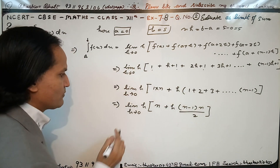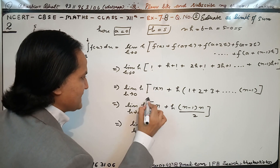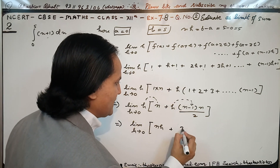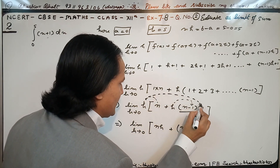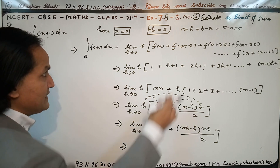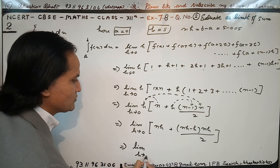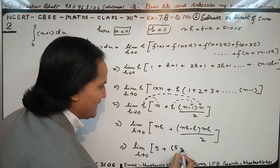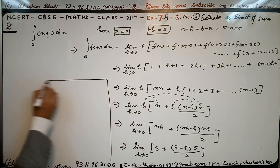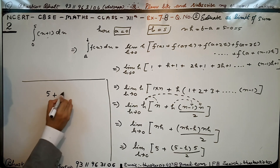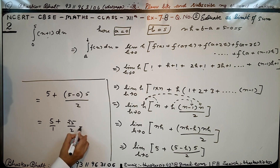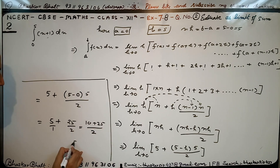अब इसको solve करते हैं। h को bracket में ले जाने पर: n·h = 5, और second term में n·h − h = 5 − h, multiply by 1/2। Limit h→0 applicable करने पर: 5 + (5 − 0) × 5/2 = 5 + 25/2। Taking LCM of 2: (10 + 25)/2 = 35/2. That is the required answer.